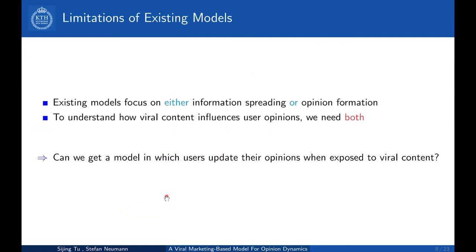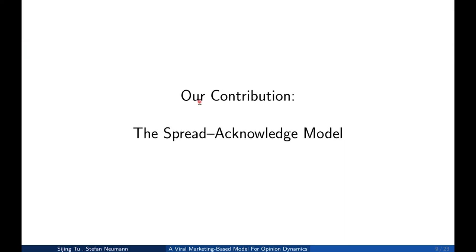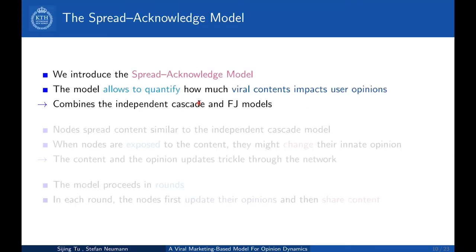Here are some limitations of the existing models. They are both very nice and popular, but the problem is that they are focused on either information spreading or opinion formation. If we want to understand how viral content influences users' opinions, we need to combine them both. So here comes our contribution: the Spread and Coverage model, which helps us quantify how much viral content impacts users' opinions by combining the two classical models.